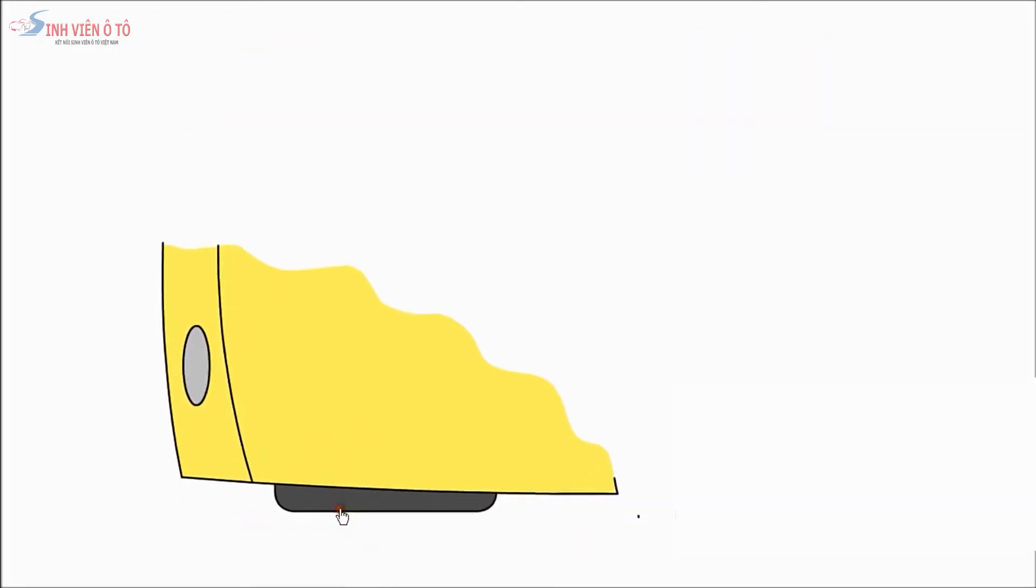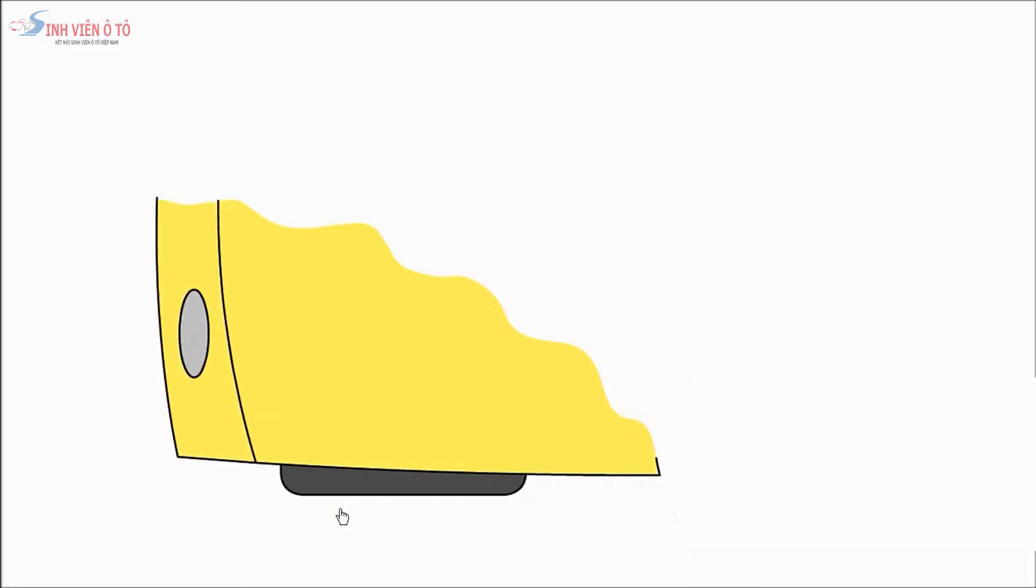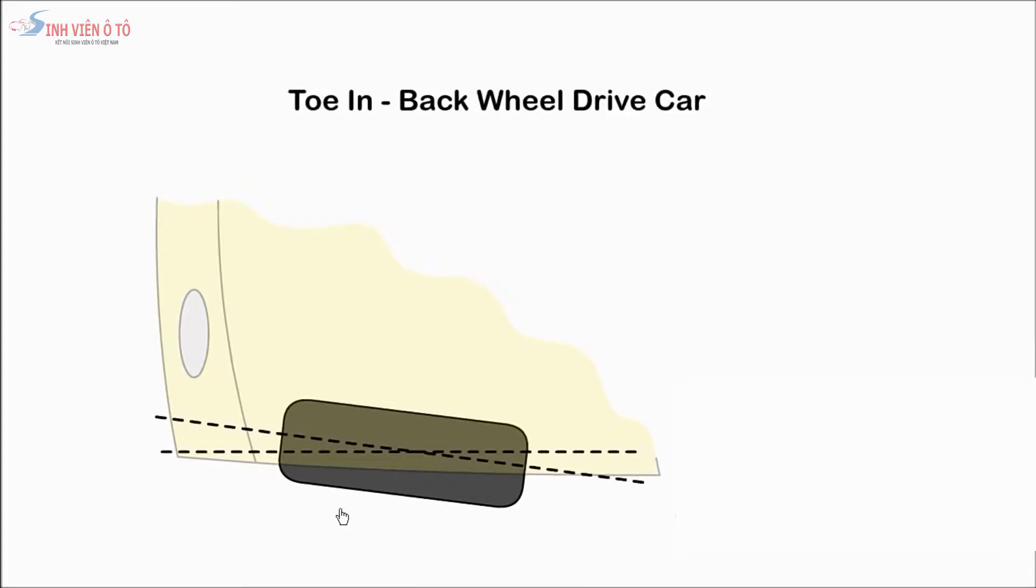Ideally, when a car is cruising on a straight road, the front wheels should be parallel. With toe-in, the front of the wheels are set slightly towards each other. This is normally used on a rear wheel drive car.